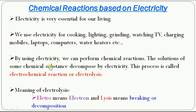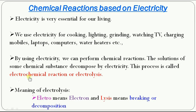Do you know we can use electricity to perform some chemical reactions? Let us see some examples. Before that, we will see some basics about these topics. The solution of some chemical substances decomposes by electricity, and this process is called an electrochemical reaction. If any chemical reaction occurs by passing electricity, we call it an electrochemical reaction.